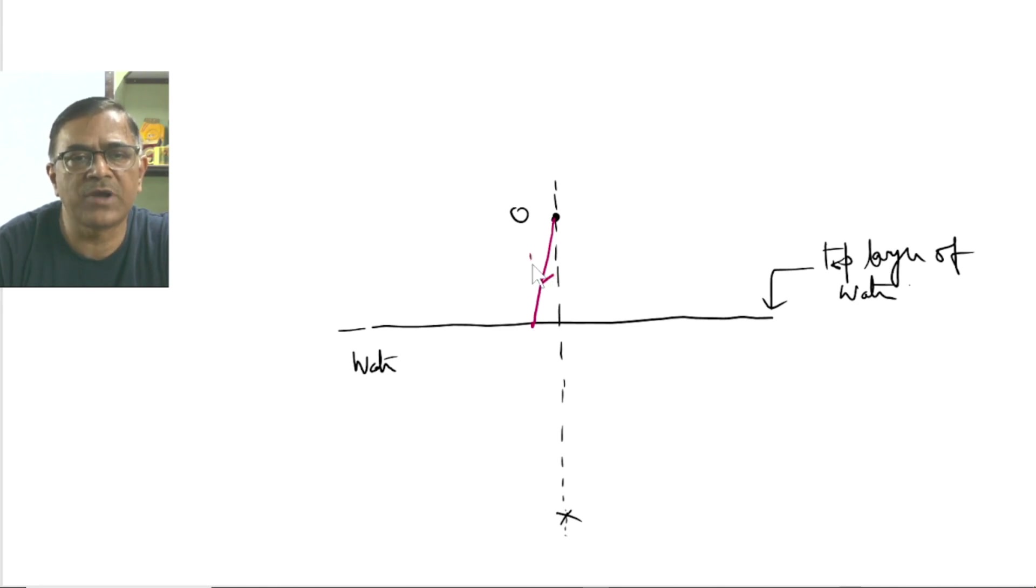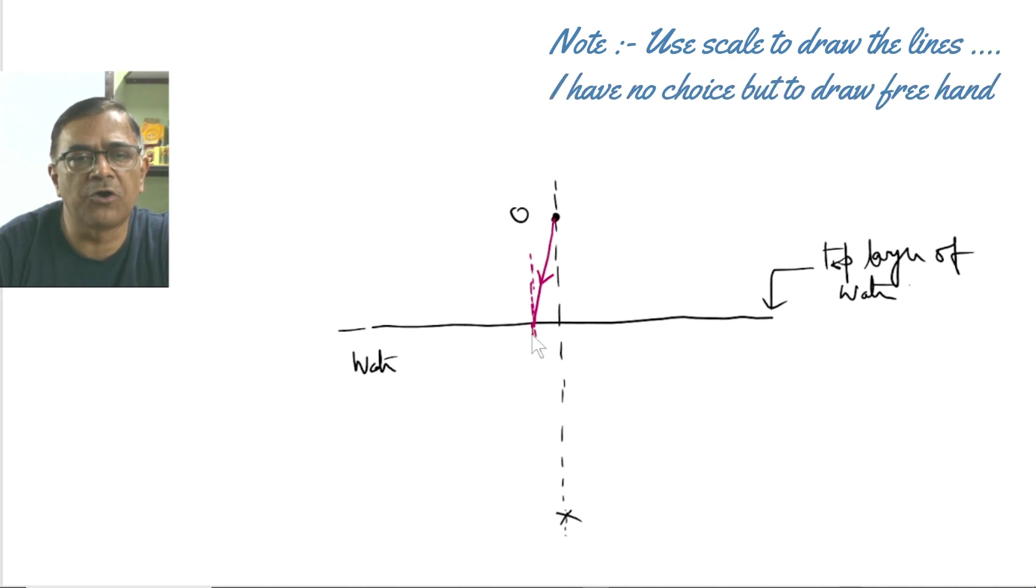Now as the ray is traveling from rarer to denser medium, it should deviate towards the normal. This is the normal. And this is the deviated ray, refracted ray.